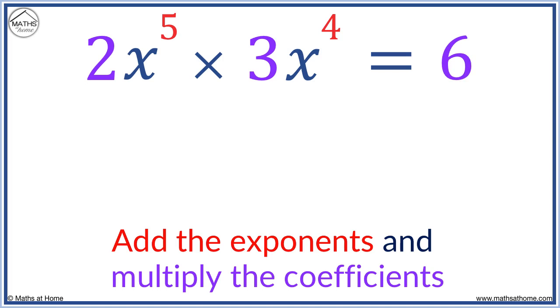We multiply these numbers at the front, as we always have done. 2 times 3 has always been 6. However, exponents have their own rules, and we add these when we multiply. So, 5 plus 4 gives us x to the power of 9.